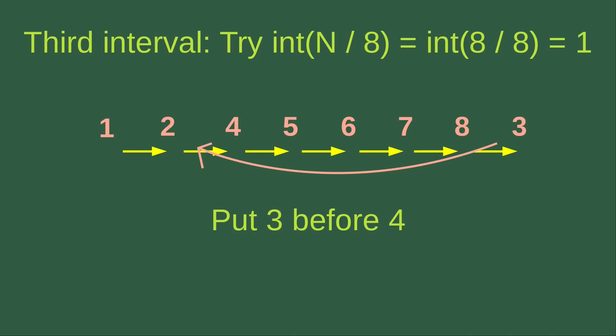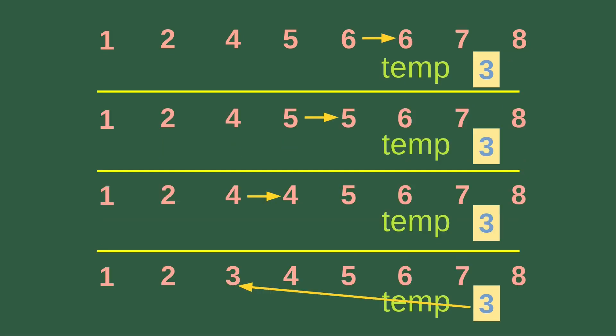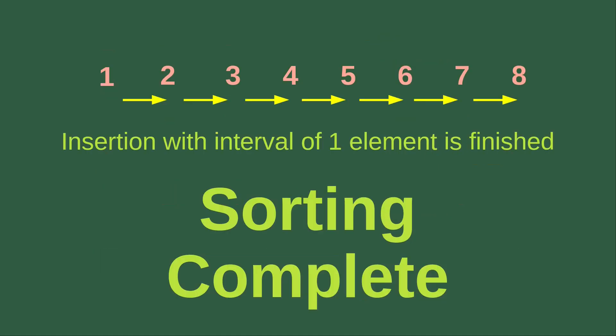The final insertion sort involves moving 3 before 4, and it requires relocation of a number of elements. First, we copy 3 to the temporary variable, then copy 8 to replace 3. After that, we copy 7 one position to the right, then copy 6 one position to the right, then copy 5 to the next position, and also copy 4 one more position to the right. Now there is space for 3 to insert — we copy 3 from the temporary variable to the original position of 4.